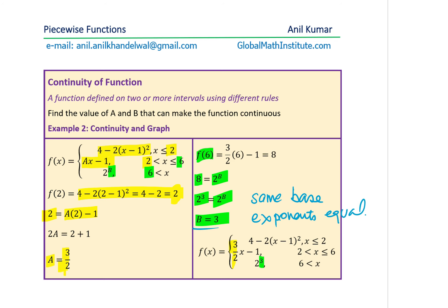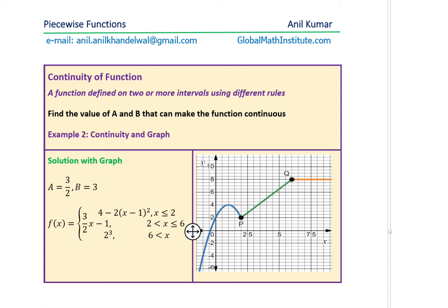Now let's sketch this. We calculated a = 3/2 and b = 3. Substituting these values gives the parabola for the first piece, then (3/2)x − 1 for the straight line, followed by the constant value 2³ = 8. Note that 2 to the power of b is a constant here — not an exponential function — since b is now known.